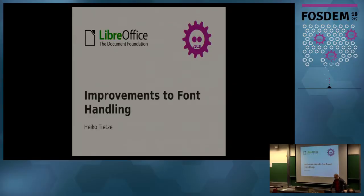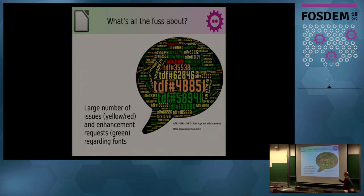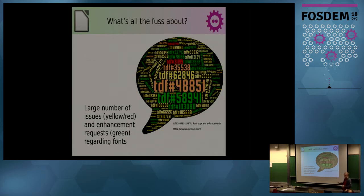Let's start with improvements to font handling. We have a lot of tickets in our bug tracker about fonts — many are things that do not work, like fonts not showing up or being garbled, and many others are enhancement requests. I've tried to collect everything here in a tech cloud: green is enhancement, yellow to red indicates issue importance. I'll talk about the green enhancement items only, covering three larger areas where fonts could be improved.